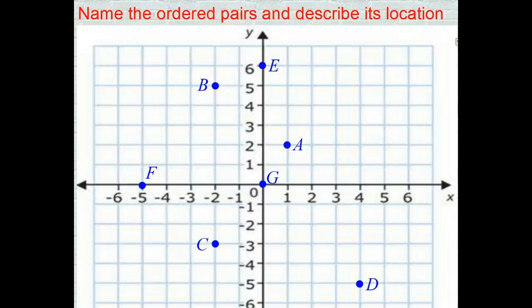In this screen, we are to name the ordered pairs and describe its location. Describing its location might be new to you. Let's start in alphabetical order. So locate point A. Point A is right here. So if I were to write the coordinates of point A, I'm going to have to figure out what quadrant it's in and what order I should be putting my numbers into the parentheses.